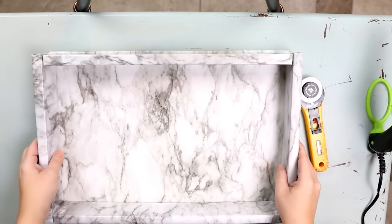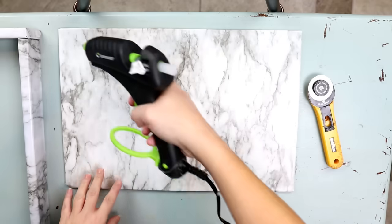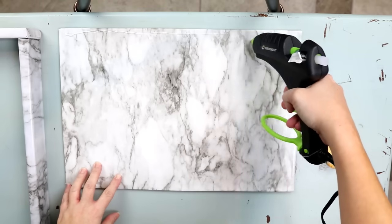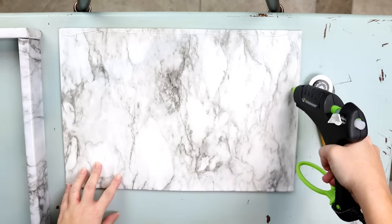Next I'm going to put my wood pieces back on top. And I'm going to run a bead of hot glue all around the edge to glue this in place.